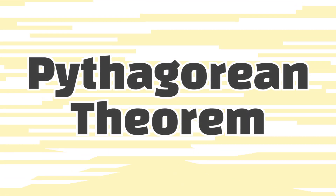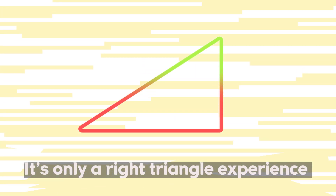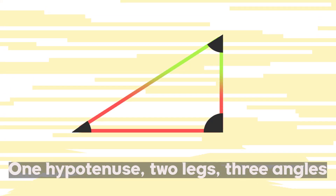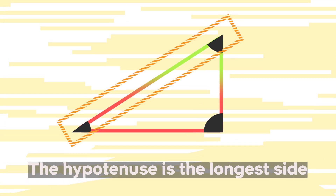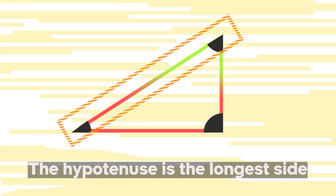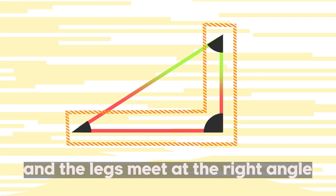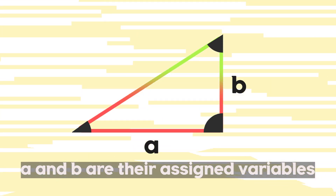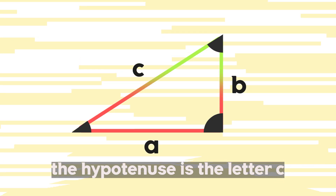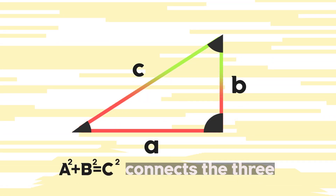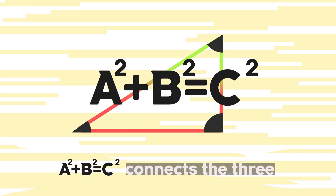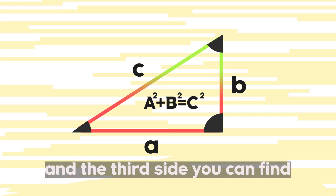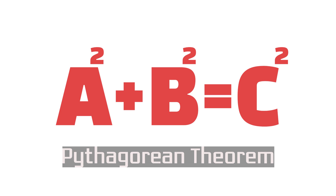Let's talk about Pythagorean Theorem. It's only your right triangle experience. One hypotenuse, two legs. Three angles, the right angle's the biggest. The hypotenuse is the longest side. Across from the right angle's where it lies. And the legs meet at the right angle. A and B are their assigned variables. The hypotenuse gets the letter C. A squared plus B squared equals C squared connects to three. So if you know two of the three sides, then use this formula. And the third side you can find. And that's the Pythagorean Theorem, guys.